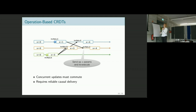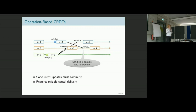For some data types, commutativity doesn't hold. Think about a set: if you add an element and remove it, that's different from first removing then adding. In situations where operations like add and remove don't commute, you need to think further. But there are solutions that have been developed.